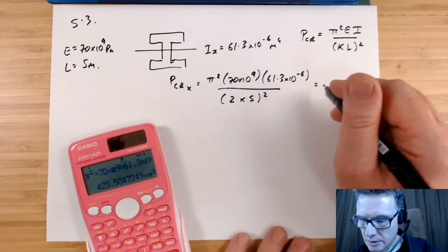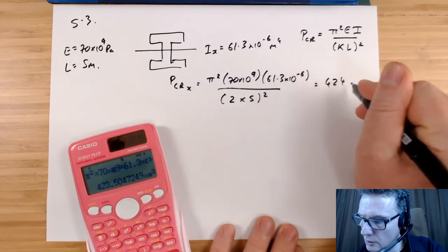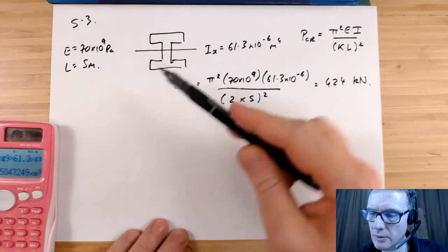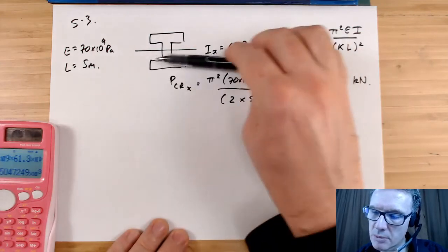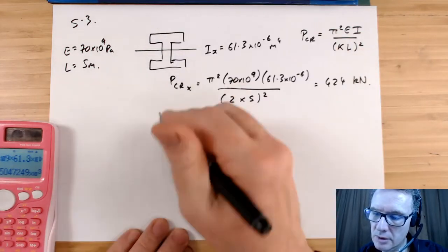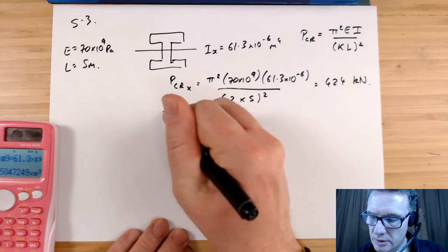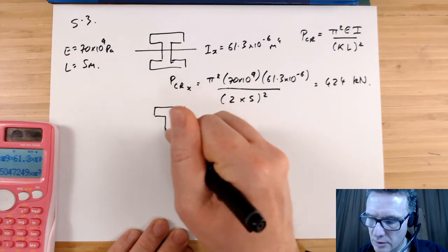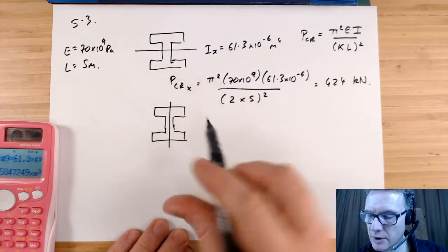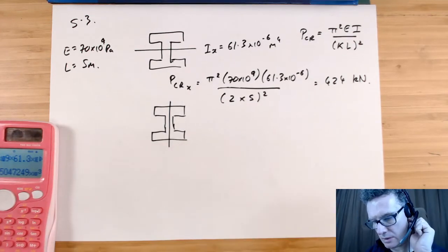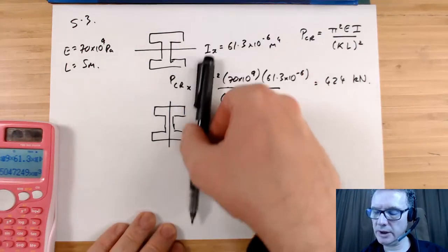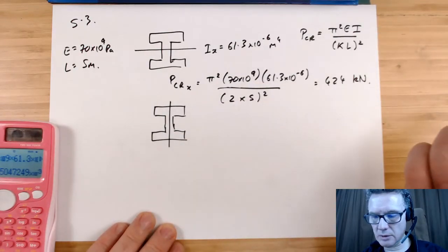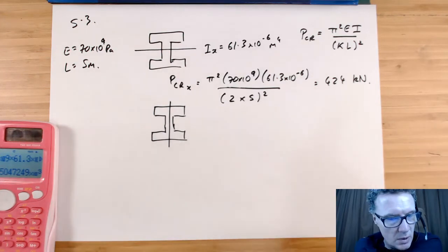Equals, so that's 10 squared. So I've got 424 kilonewtons. Now for the other case, so we're imagining that's potentially buckling off in that direction. So now let's consider what's happening if we look around this neutral axis. So now we're considering buckling in this direction here.